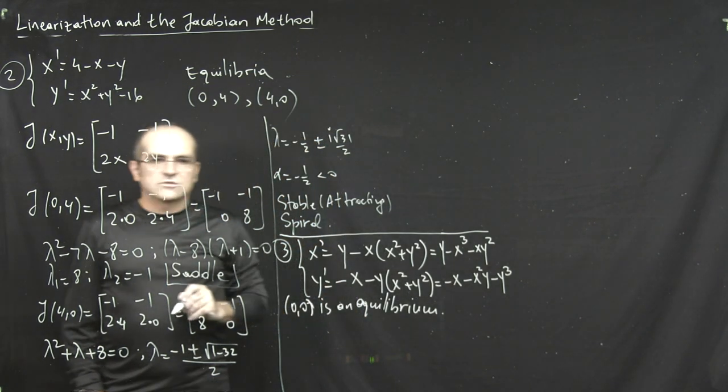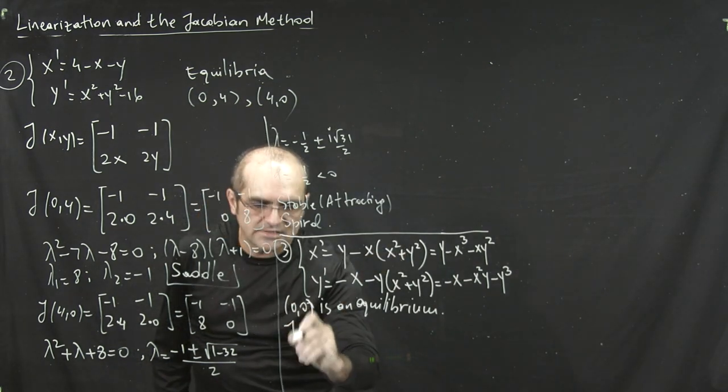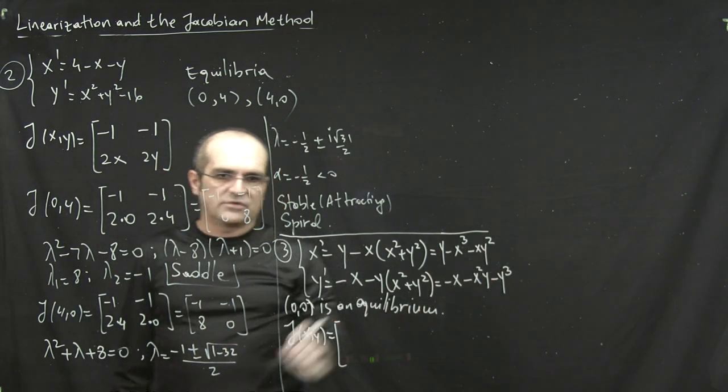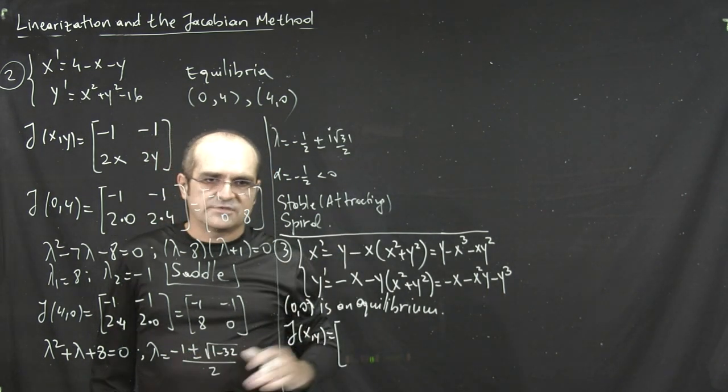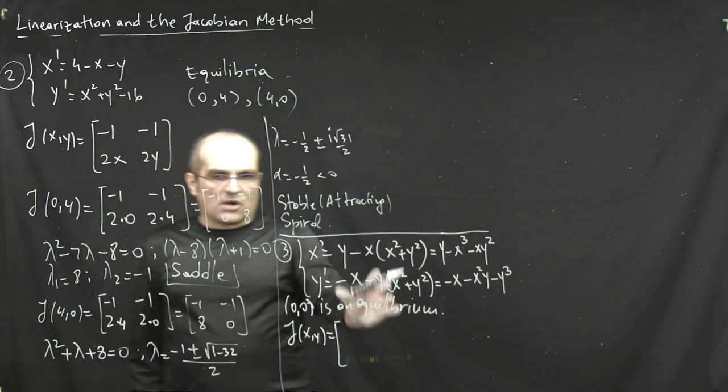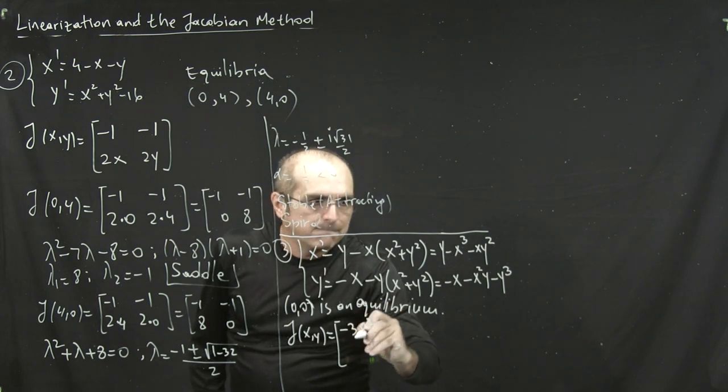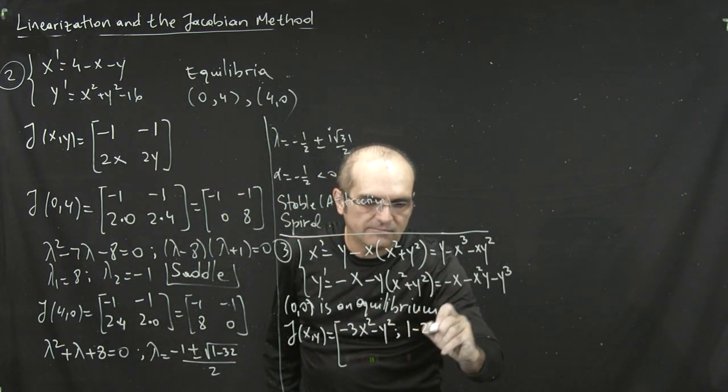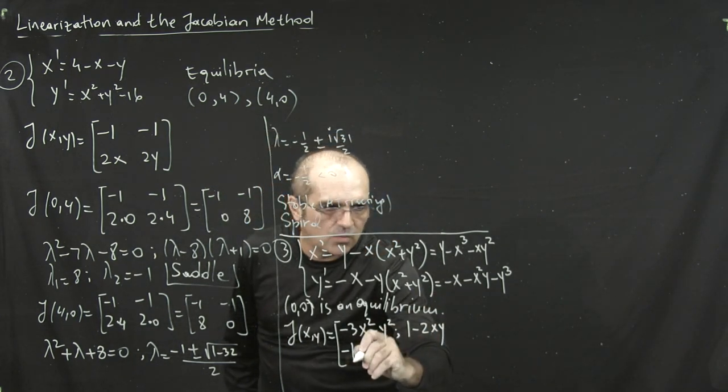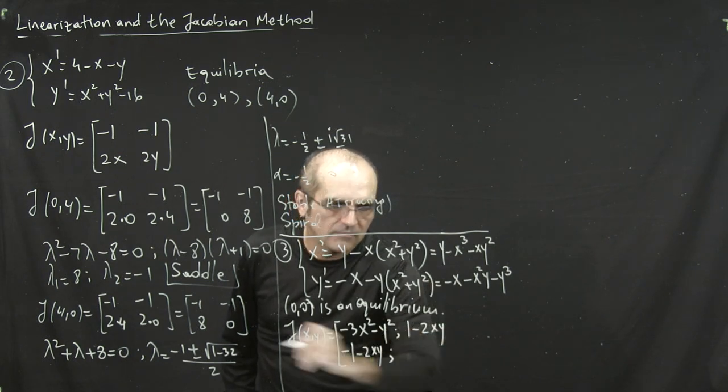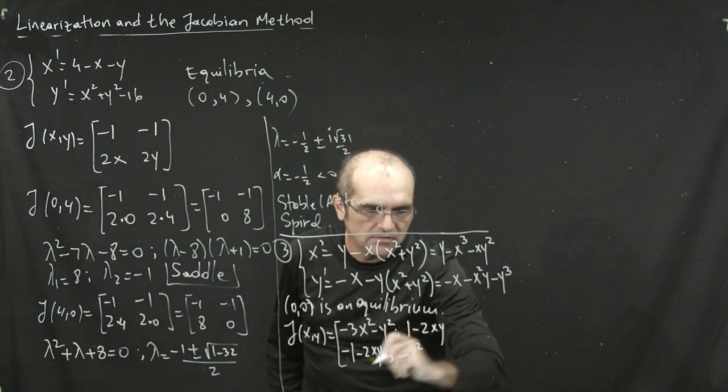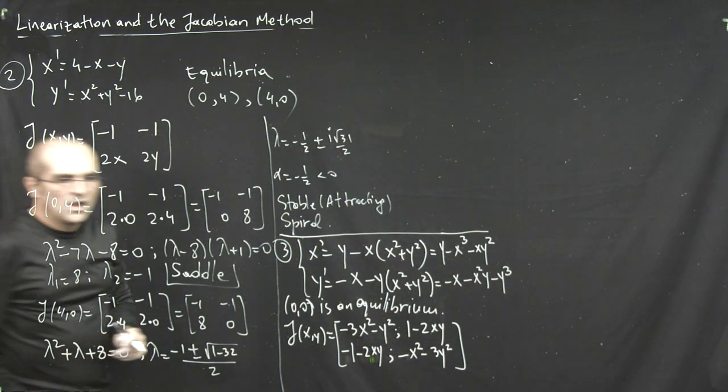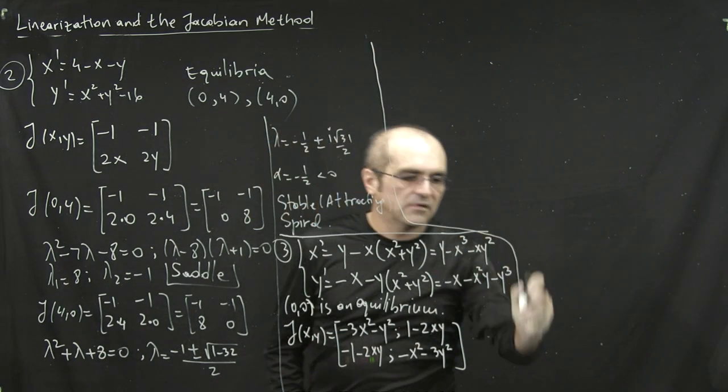So let's say you want to use the Jacobian method to find its stability. Alright, so let's look at the Jacobian matrix J of xy. And if you want just for practice pause me and do the partial derivatives. I strongly encourage you to actually do that to make sure you can do the partial derivatives correctly. Because you're going to have that in the final. And then check with me. So partial x is minus 3x squared minus y squared. And then partial y is 1 minus 2xy. Moving on, partial x of the second equation is minus 1 minus 2xy. And that's it. And then partial y is minus x squared minus 3y squared. Alright, so that's the Jacobian in x and y.